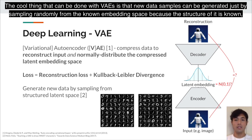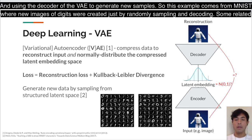What's powerful about VAEs is that new data samples can be generated just by sampling randomly in that known embedding space and then using the decoder to generate new samples. This example comes from MNIST, where new images of digits were created just by randomly sampling and decoding in the latent embedding space.